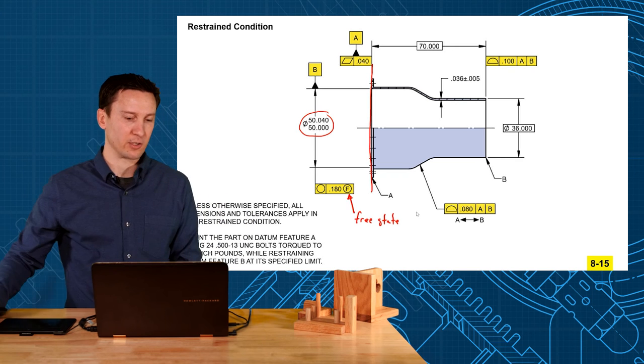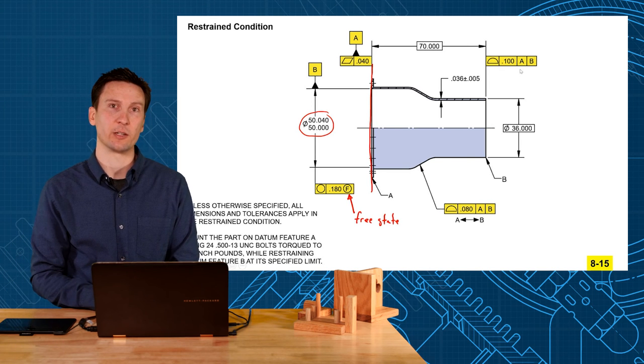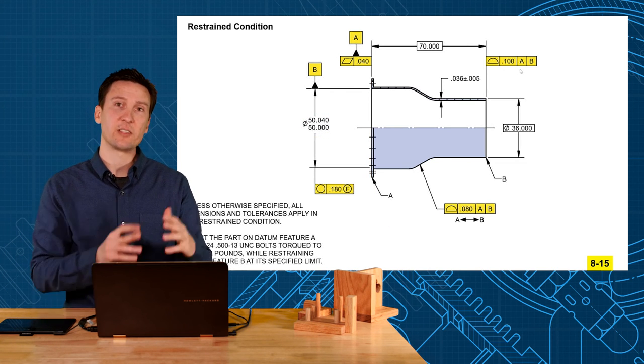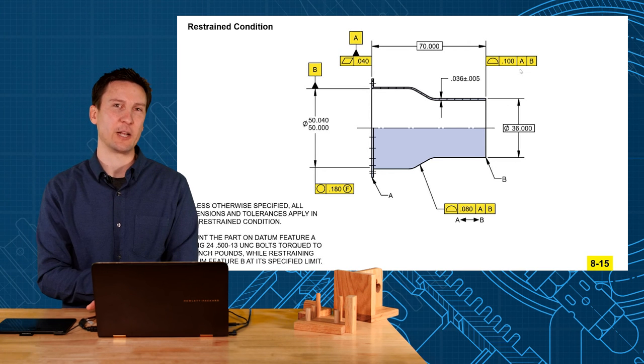Now it must meet the size talents of plus or minus 20 in the restrained, flatness of 40 in the restrained, and these profile talents in the restrained condition. So this is how we handle a restrained condition and then we can unlock a few things with these free state modifiers.